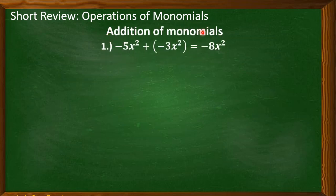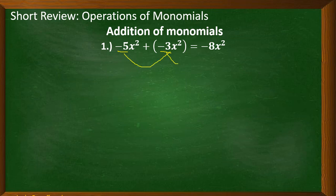For addition of monomials, say if we have negative 5x squared plus negative 3x squared, the sum is negative 8x squared. How did we get negative 8x squared? Just add the numerical coefficients negative 5 and negative 3 applying the rule of signed numbers, and that is equal to negative 8. Then copy the literal coefficient which is x squared.